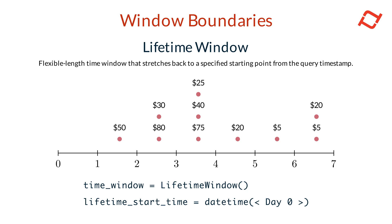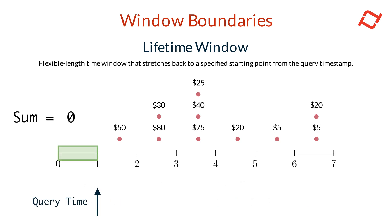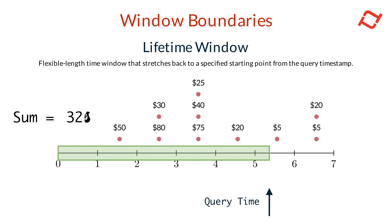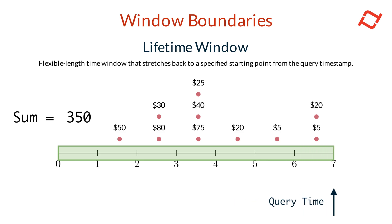The lifetime start time parameter on a batch or stream feature view defines when this window begins. In this example, we have set the lifetime start time to day zero. You can see how the lifetime window grows from day zero to the current query timestamp.